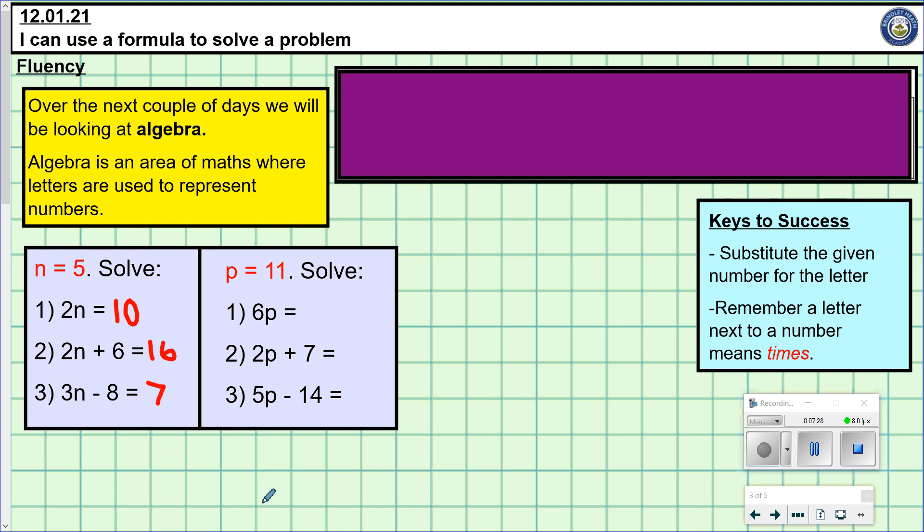It doesn't always have to be n. In algebra, it could be any letter. Sometimes it might be a. Sometimes it might be x. Sometimes it might be b. It can be any letter. So, the next 3 questions. This time we've used the letter p. It doesn't make any difference though. So, it says here for these questions, p equals 11. So, question 1. What are 6 lots of p? 6p. So, 6 times p. 6 times 11. 66. Just pause the video now. And have a go at question 2 and 3. Here for me.